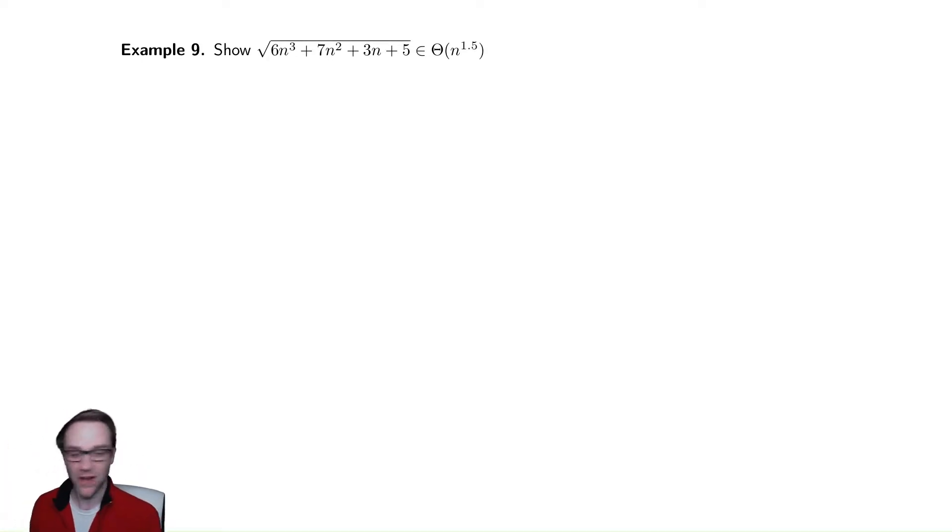Where on earth did n to the 1.5 come from? Well, inside of the square root, there's n cubed, and then we're taking a square root of that. So this looks like approximately the square root of n cubed, ignoring all of the constants, which is n to the 1.5.